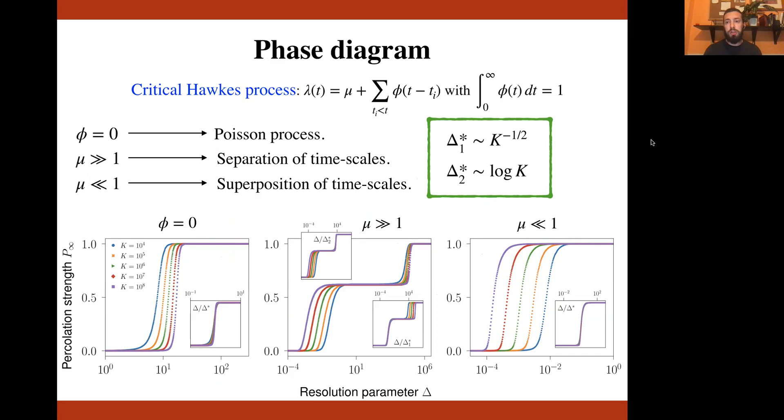And this spontaneous Poisson process produces events, and each event at time ti excites, produces an excitation in the rate by means of this function phi, known as the kernel, that increases the rate and thus increases the probability that new events are observed close to ti.